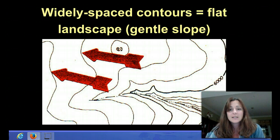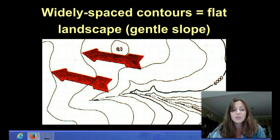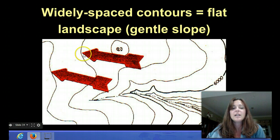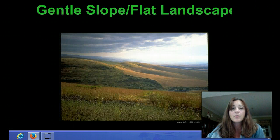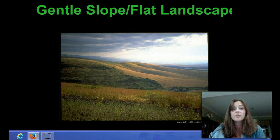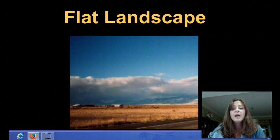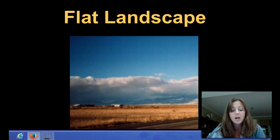First, widely spaced contour lines equal a flat landscape. So if you see two contour lines on a map that are spread apart, like these indicated by the red arrows, this area in here is considered to be flat. Here's a picture of a flat landscape, or we also call it a gentle slope. Another picture of a flat landscape. This would have widely spread contour lines.